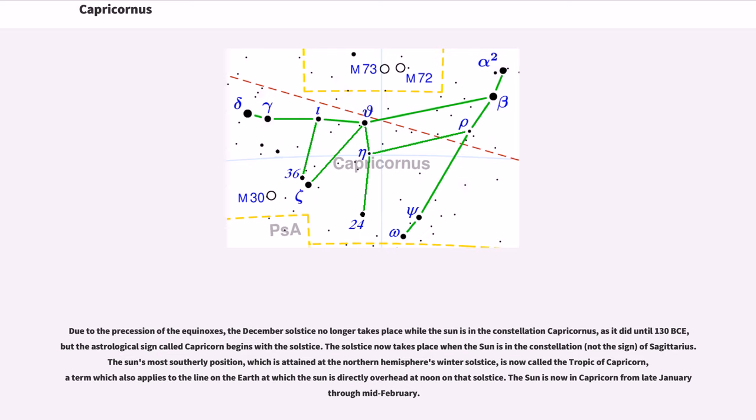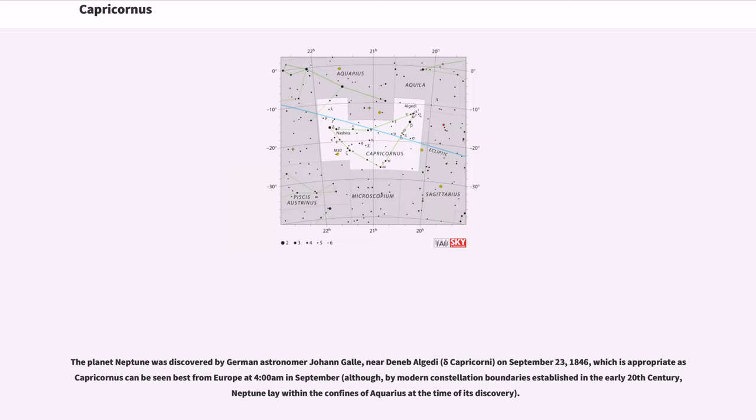The sun is now in Capricorn from late January through mid-February. The planet Neptune was discovered by German astronomer Johann Galle, near Deneb al-Gedi, Delta Capricorni, on September 23, 1846, which is appropriate as Capricornus can be seen best from Europe at 4 a.m. in September. Although, by modern constellation boundaries established in the early 20th century, Neptune lay within the confines of Aquarius at the time of its discovery.